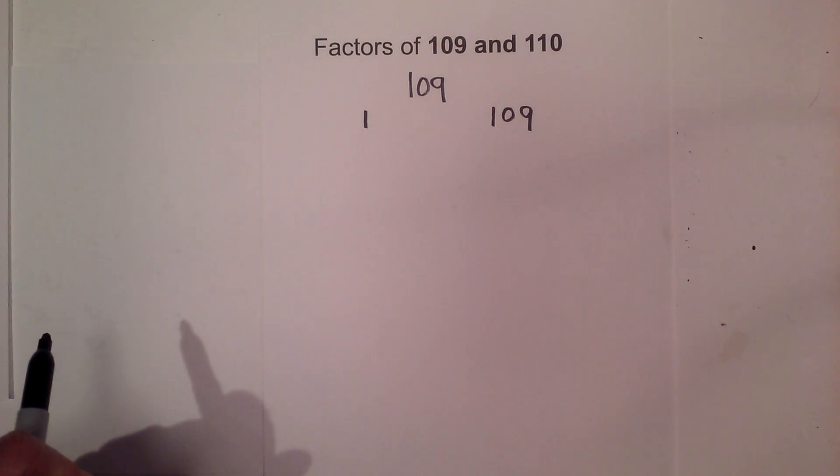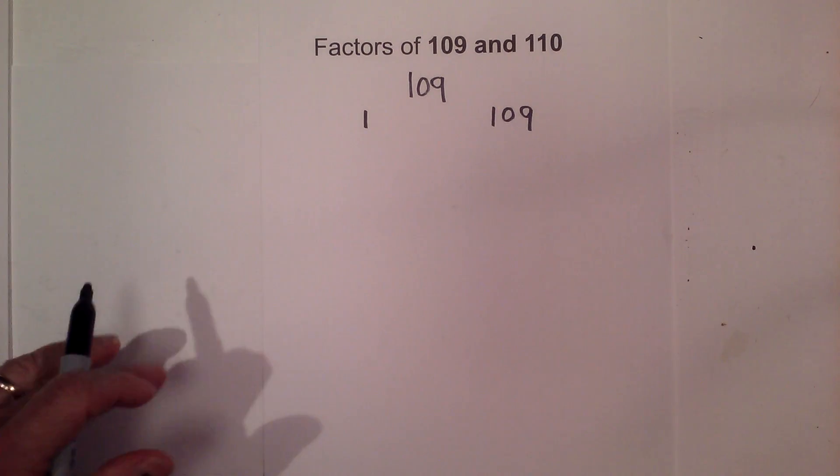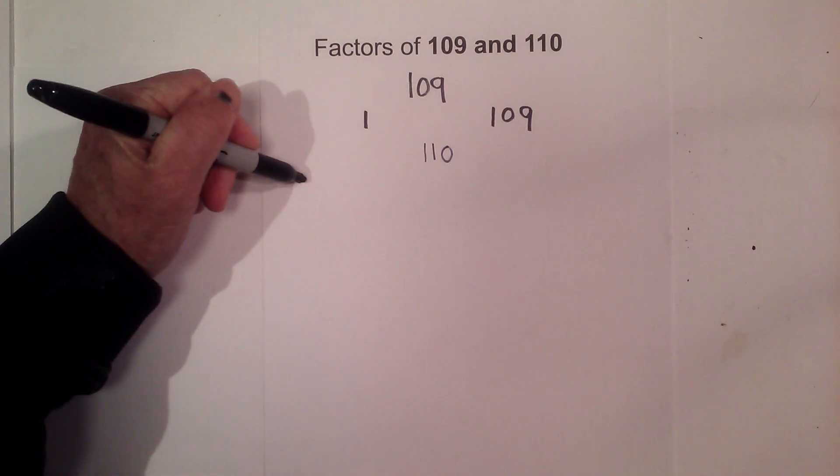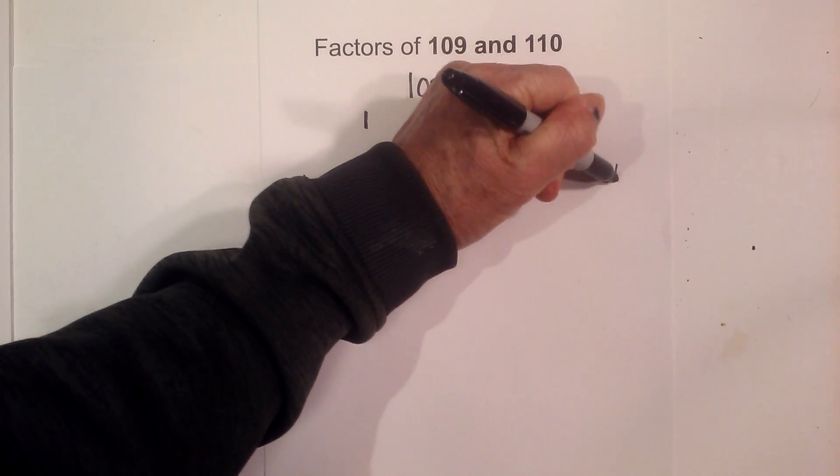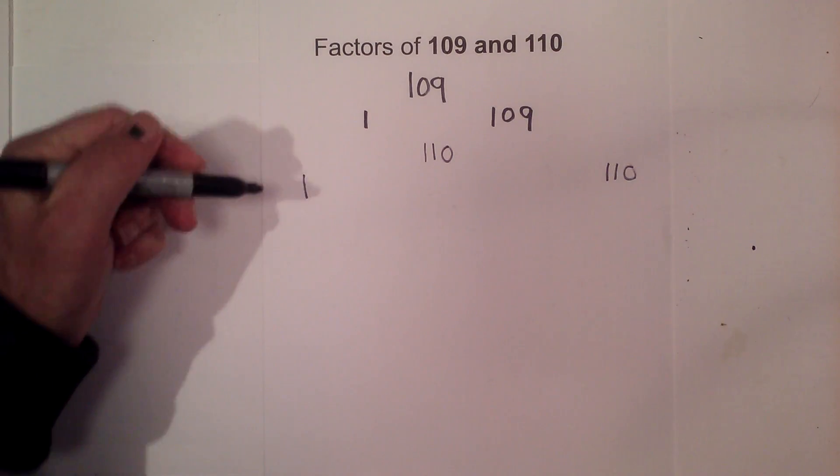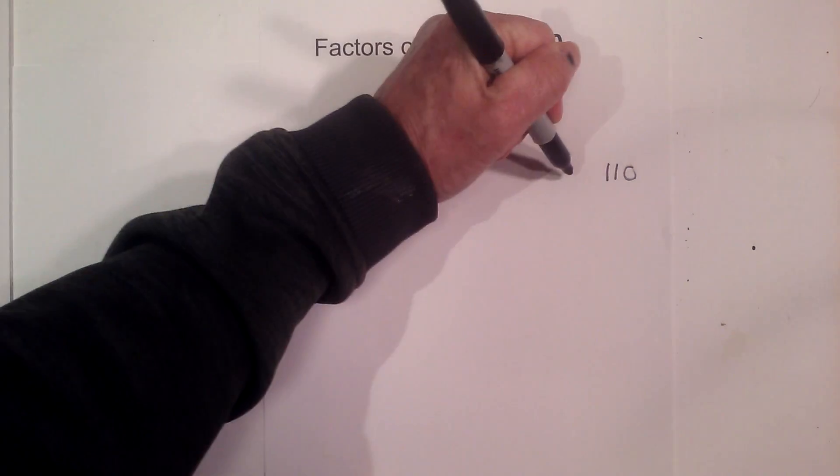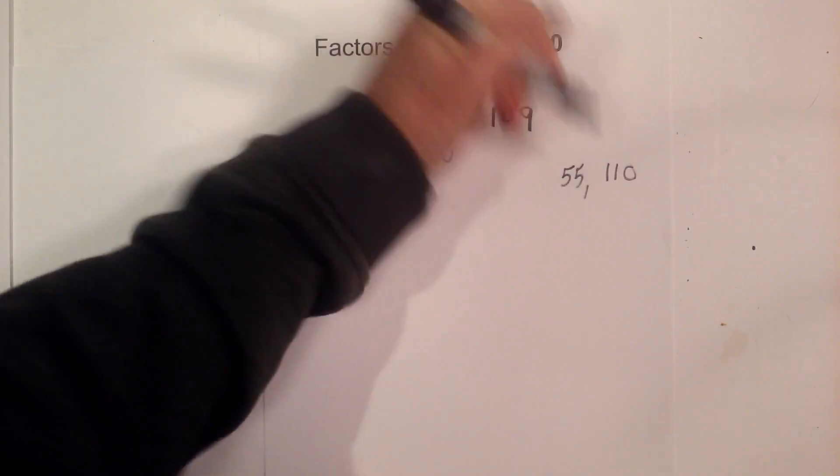Now let's get started with 110. Okay, 110 is a composite number, so I will start with 1 times 110. Next, 2 goes into 110 55 times.